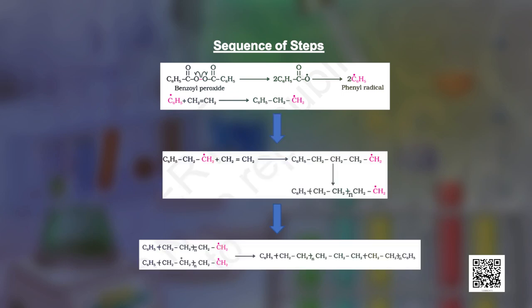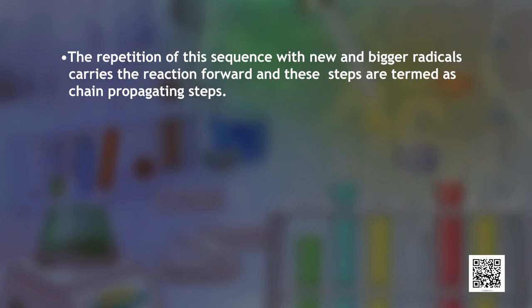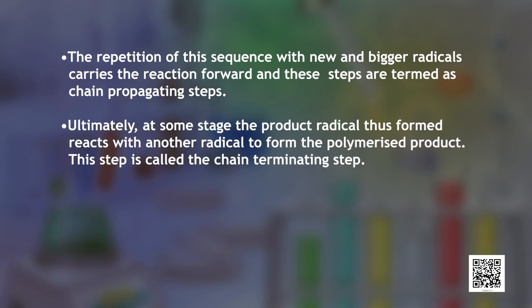As this radical reacts with another molecule of ethene, another bigger size radical is formed. The repetition of this sequence with new and bigger radicals carries the reaction forward, and these steps are termed as chain propagating steps. Ultimately, at some stage the product radical formed reacts with another radical to form the polymerized product. This step is termed as the chain terminating step. The sequence of steps is well depicted here.